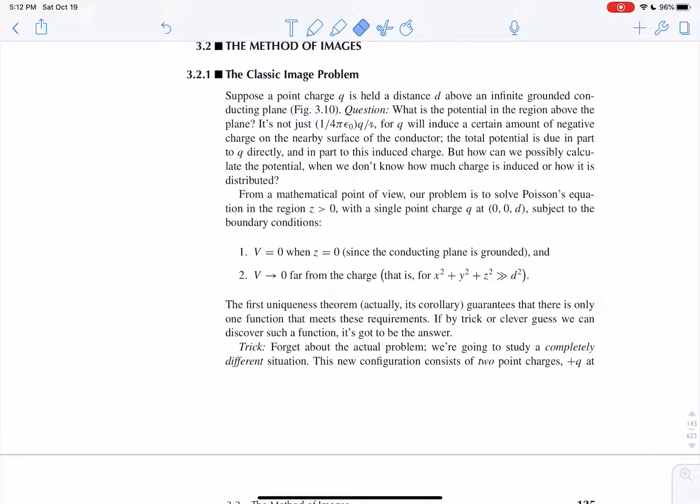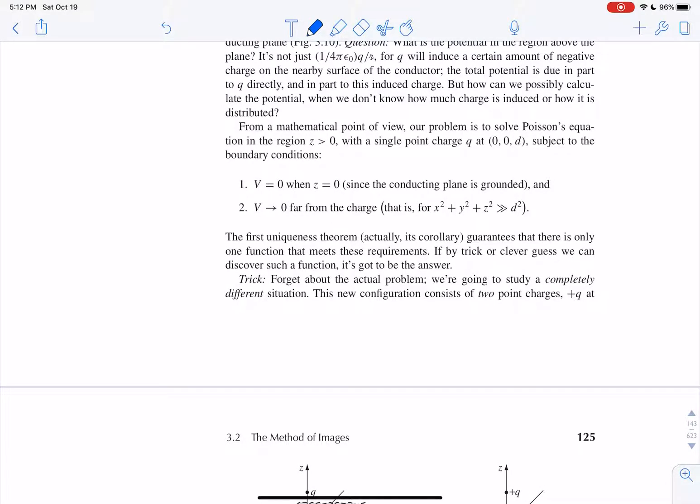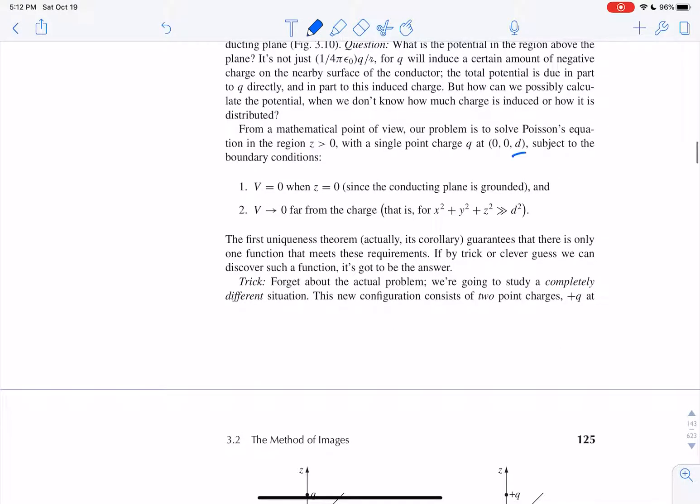But how do we possibly know this? So what we have to do is solve Poisson's equation in the region between z equals, well, greater than z equals zero. So between, if this is the plane and this is your charge and this is the z direction, then you need to solve for v in the region above the plane where z is greater than zero. And you've got a single point charge at some height, z equals d, subject to these boundary conditions.